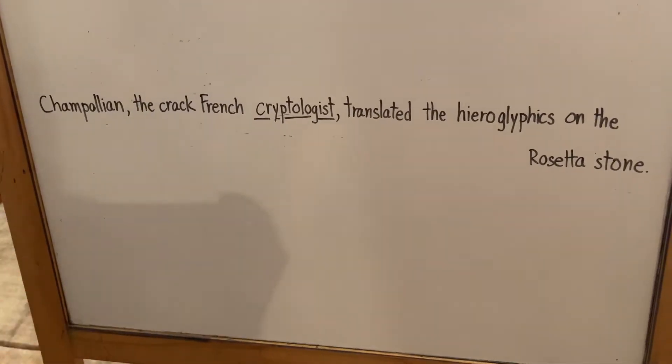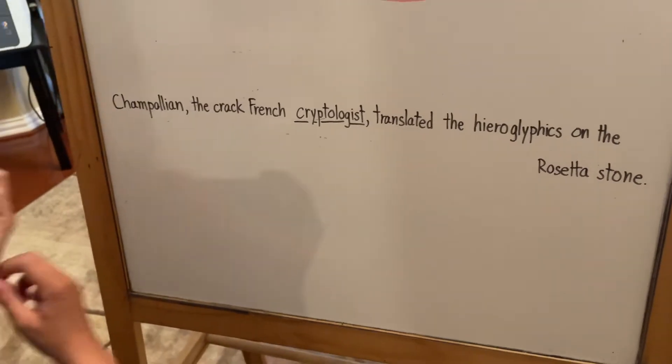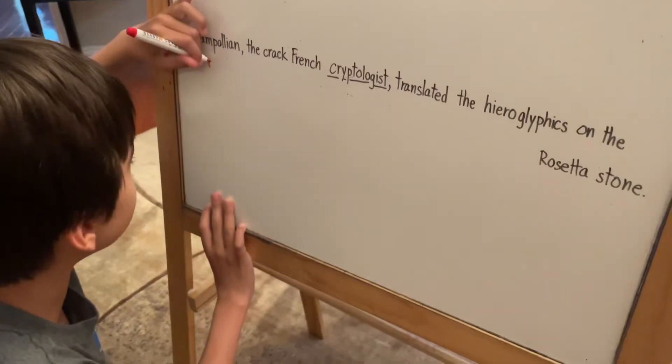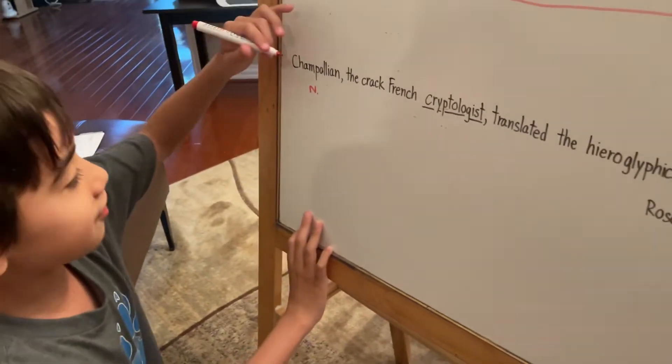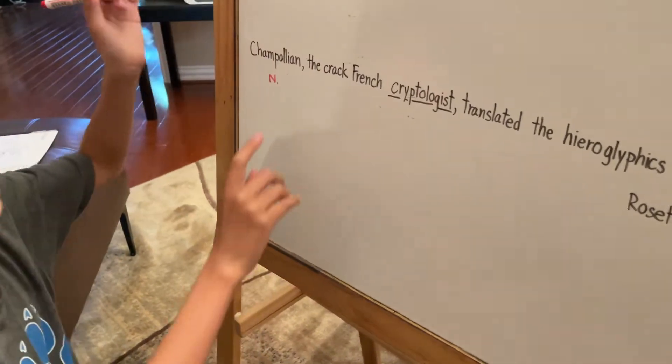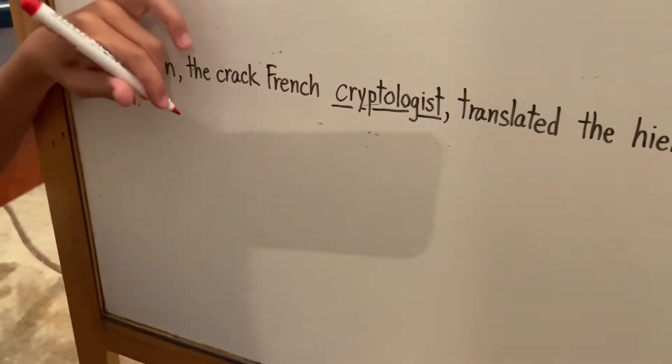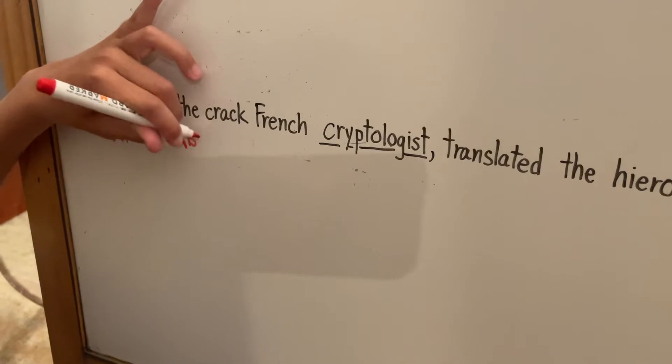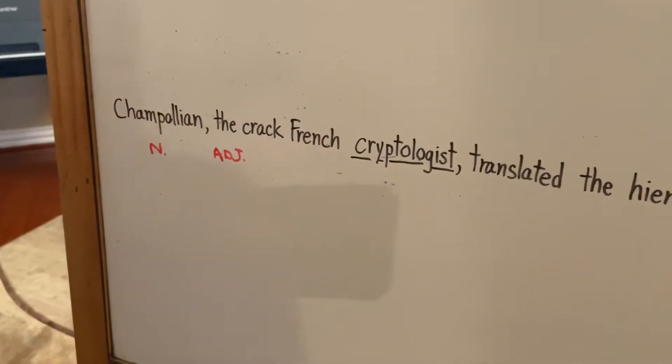Okay, we will begin with parts of speech. Trampoleon is a noun because he's a person, and then 'the' is an adjective because what is it? It's the crack French cryptologist. And then crack is an adjective in this case.